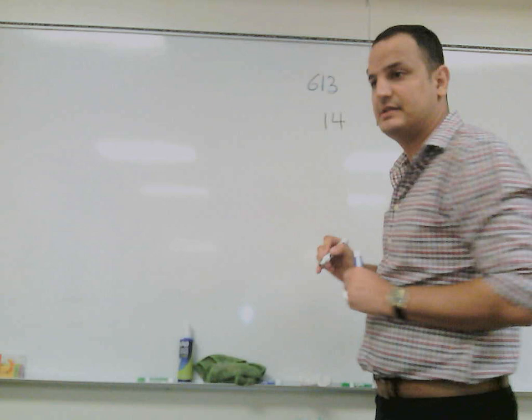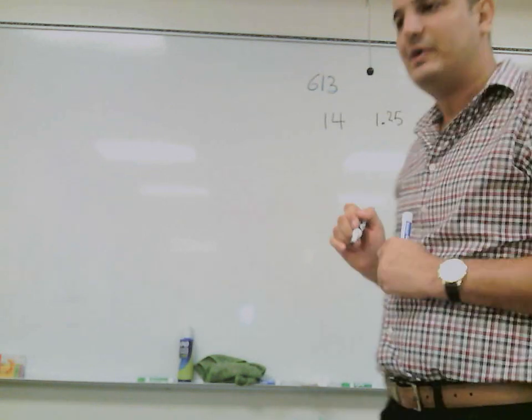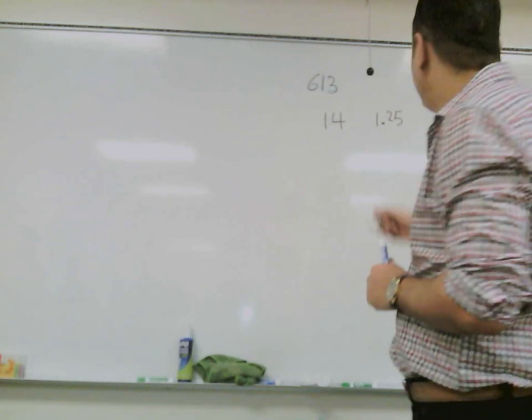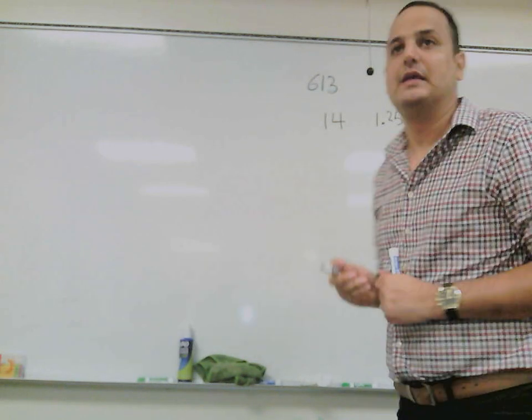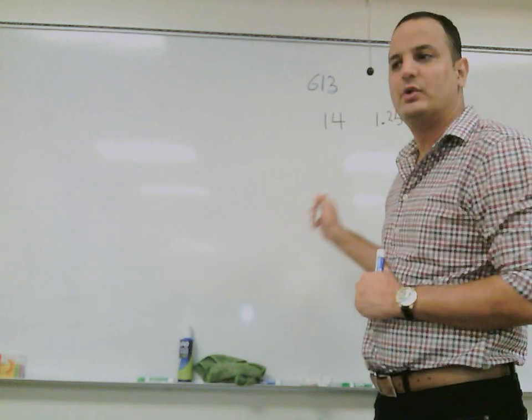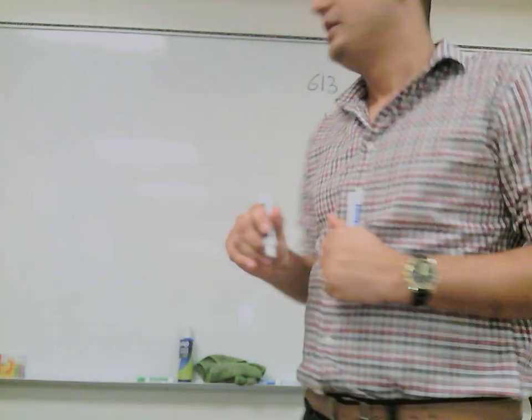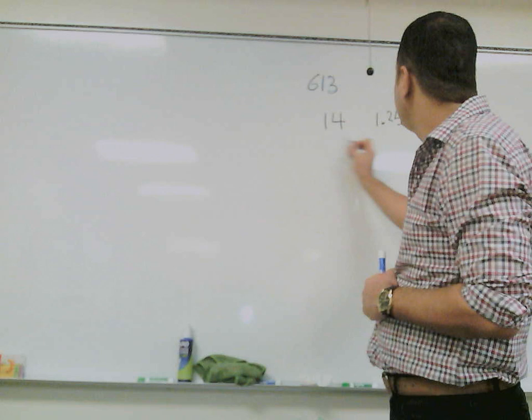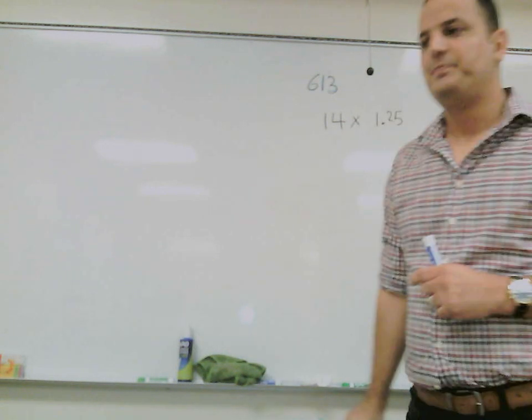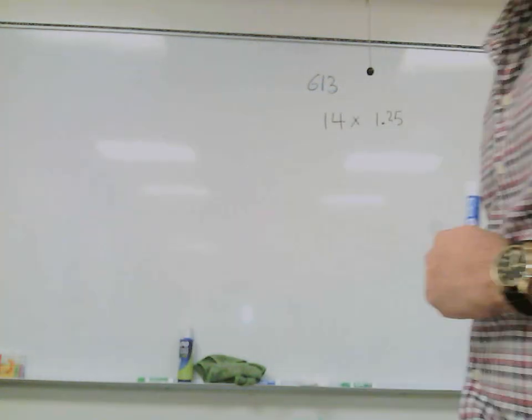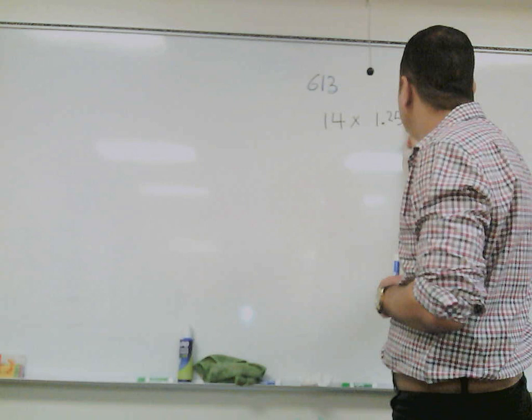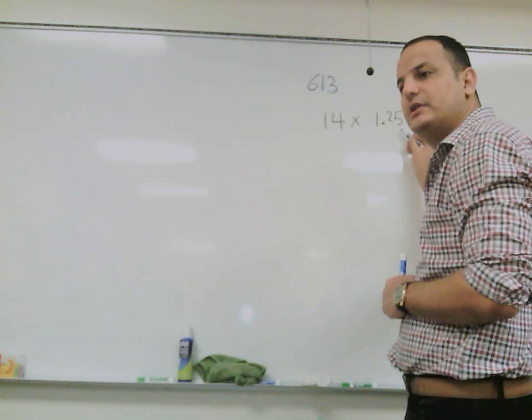So we want to know how much the school profited from selling the pretzels, or how much they make. So what do we have to do? Do we have to multiply or divide? Well, if we want to know how much they make, we have to multiply 14 by 1.25, and that's a decimal number. We have two decimal digits after this decimal point.